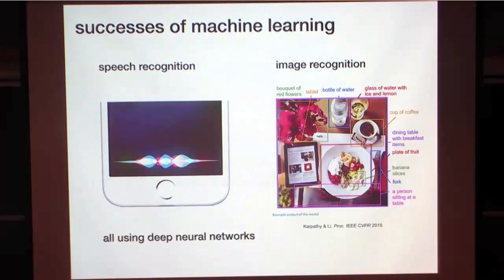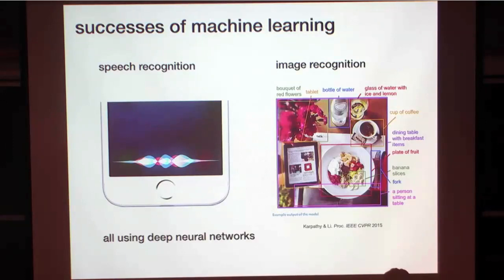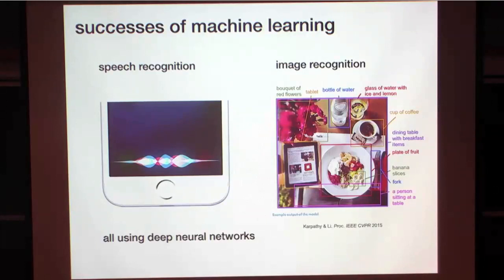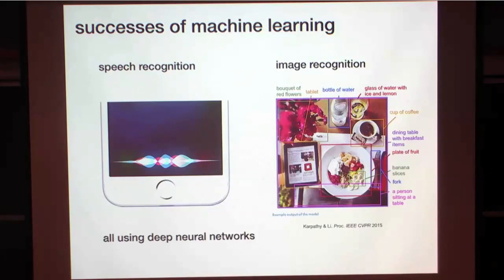I'm sure most of you are aware that in the past decade there have been massive successes of machine learning in problems traditionally considered extremely hard, such as speech recognition and image recognition. The buzzword behind all these successes is deep learning, or deep neural networks. You might think that since these problems are so hard, the solutions must involve a huge amount of complicated details, but actually the basic ideas involved are very simple.